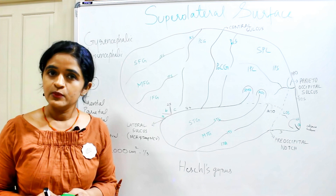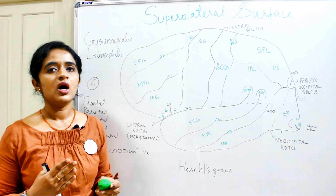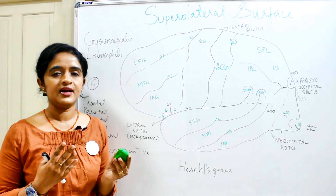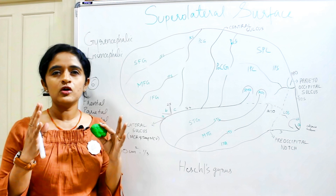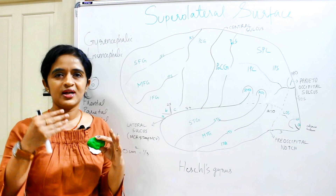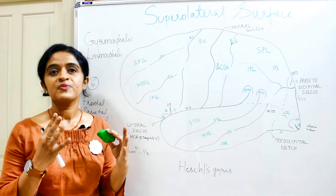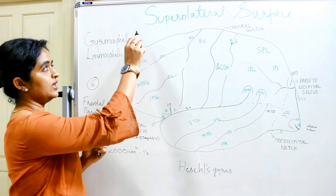Before we move on to the functional areas, you should know how the cerebrum is divided into lobes, what the main sulci are, and what the main gyri are. The human brain is highly sophisticated and convoluted, featuring many gyri (convolutions) and sulci (depressions). This convoluted structure seen in higher mammals is called gyrencephalic.